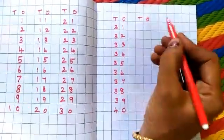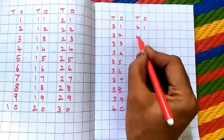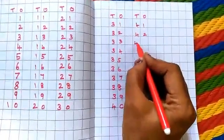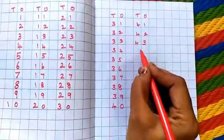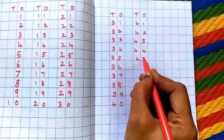10's place, 1's place. 4, 1, 41. 4, 2, 42. 4, 3, 43. 4, 4, 44. 4, 5, 45.